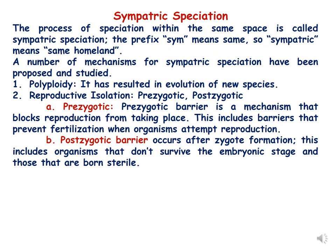Sympatric speciation is the process of speciation within the same space. A number of mechanisms for sympatric speciation have been proposed and studied. Examples include prezygotic reproductive isolation or postzygotic barriers. For instance, a polyploid is unable to hybridize with a diploid organism, resulting in the formation of a new species. Sympatric speciation happens because of reproductive isolation within the same area.